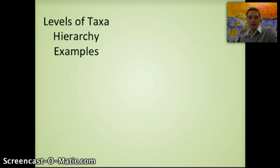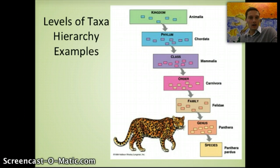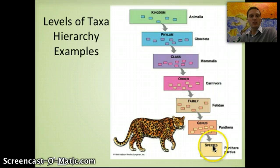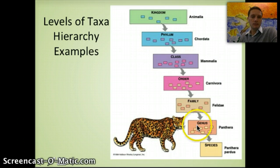Looking at an example of taxa hierarchy with a panther: the kingdom it belongs to is Animalia. As we progress from kingdom through phylum, class, order, family, genus, to species, we get more and more specific. The family contains other very closely related organisms, the genus is even more specific, and the species identifies this individual organism precisely.